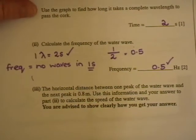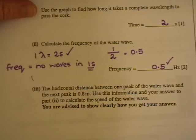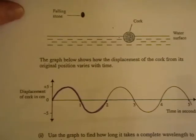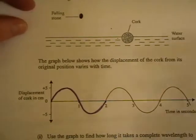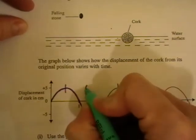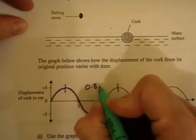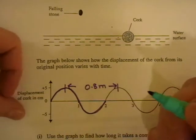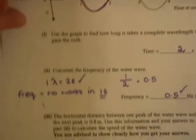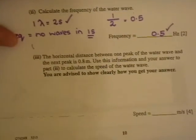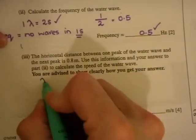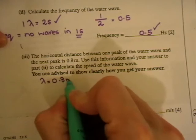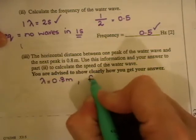The horizontal distance between the peak of a water wave and the next wave is 0.8 metres. Use this information and your answer to part two to calculate the speed of the water wave. So if we have a look back at the diagram again, it says from the peak of one wave to the next is 0.8 metres. So really the information they are telling us there is the wavelength. And the wavelength then is 0.8 metres. So lambda is 0.8 metres. We already know from the answer above that the frequency is 0.5 Hertz.